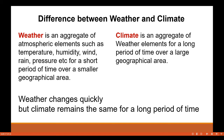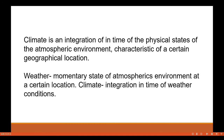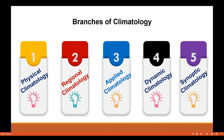For climate to change, it requires a lot of time. A place will have weather, whereas an area will have climate — that is the key difference. Climate is an integration in time of the physical state of the atmospheric environment characteristic of a certain geographical location, whereas weather is the momentary state of the atmospheric environment at a certain location. In other words, climate is the integration in time of weather conditions.